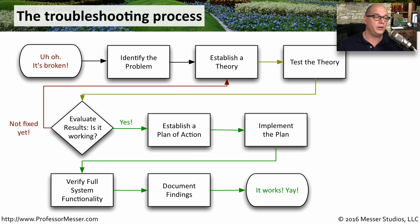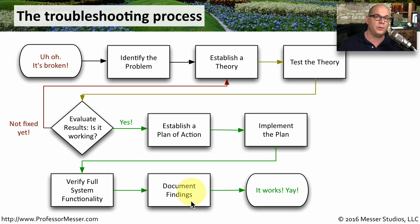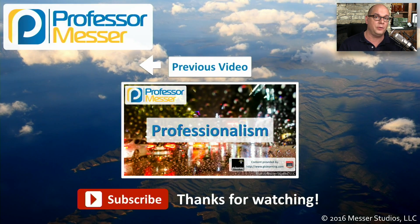Now you've made it all the way through the troubleshooting process. You've identified the problem that's occurring. You've created your own list of theories of why this might be happening. You've tested those theories and identified which one actually solves the issue. You create a plan of action on how you're going to resolve this issue, you implement that plan, and then you test it and make sure that the system is performing exactly as expected. Once all of this is completed, you document the entire process you went through. And now you can solve any problem that you're faced with in an IT environment.